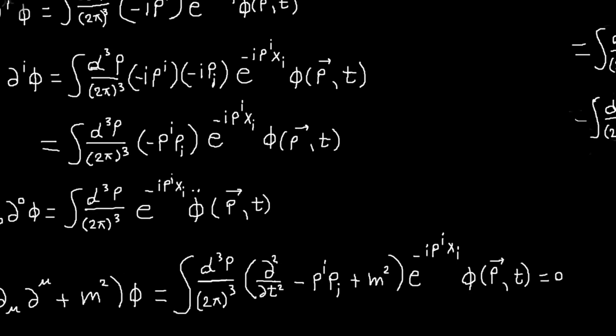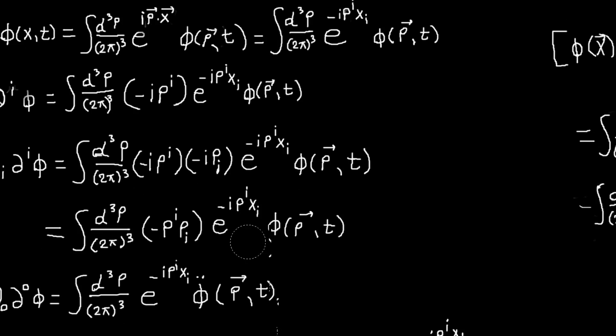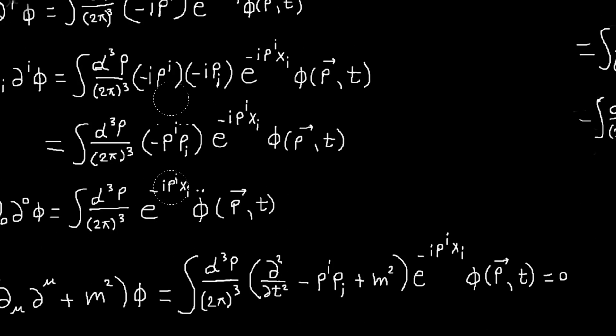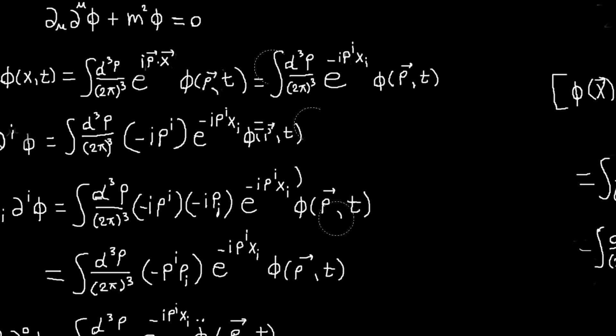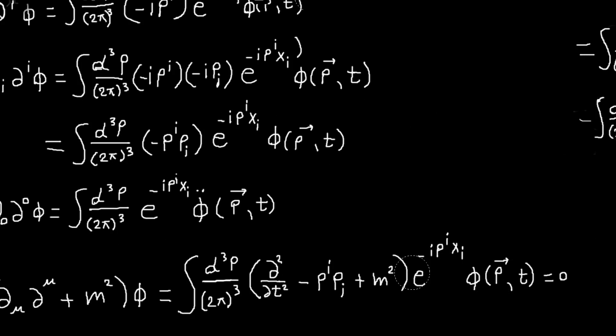Now we can write down our Klein-Gordon equation. d mu d mu phi will be this term plus this term. If we factor all the operator terms out, we'll have a second derivative with respect to time, and we have a minus pi here, and then we have our plus m squared from this term. Our equation becomes this.